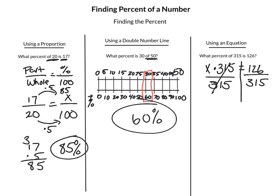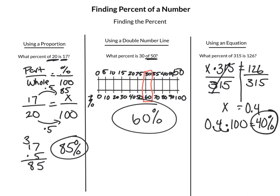315 divided by 315 is 1. So on this side, we're left with x. Then what we're going to do is 126 divided by 315. When we do that division out, we're going to get 0.4. That is our percent as a decimal. To get it into percent form, we then take the 0.4, multiply by 100, which moves the decimal over twice. So our percent is 40%. That's three different ways to be able to work with percent. You can use whatever method you choose on your assignment.